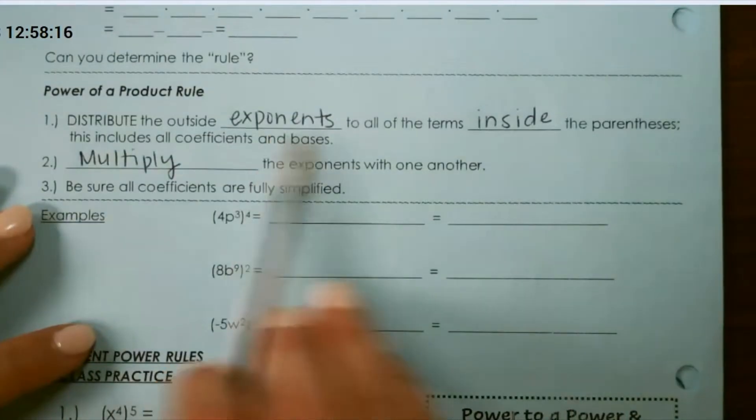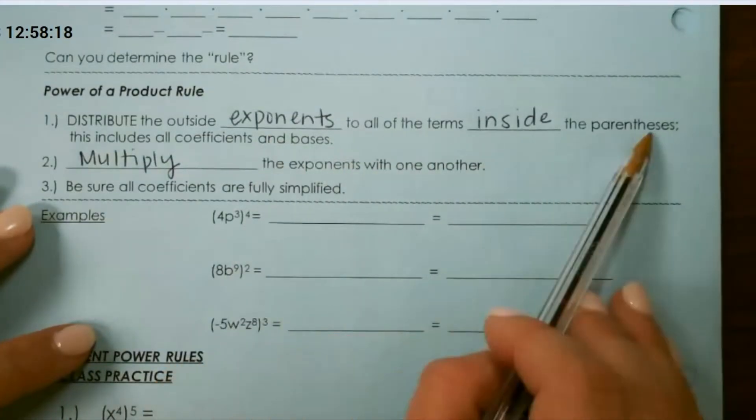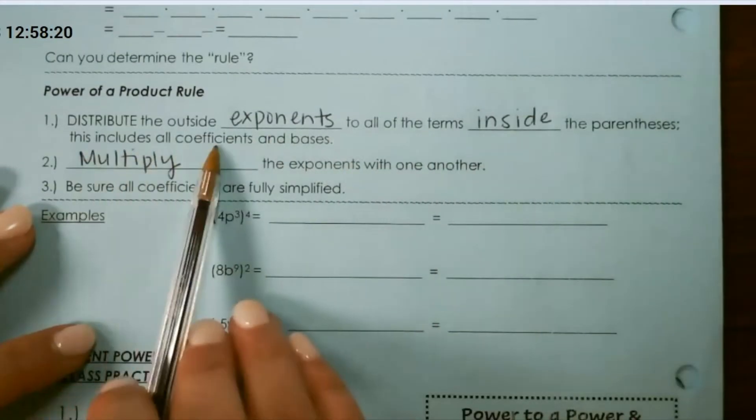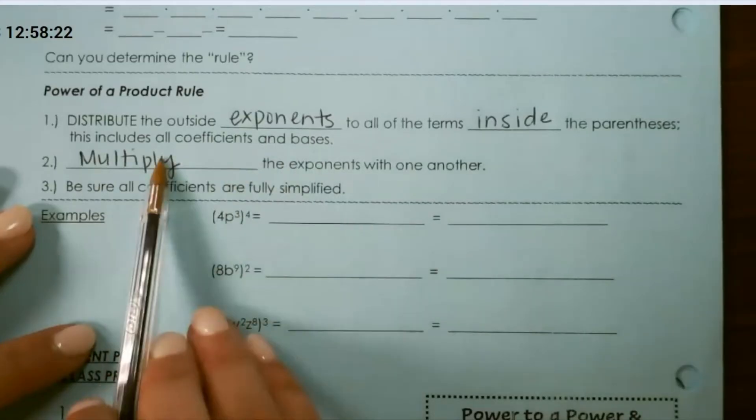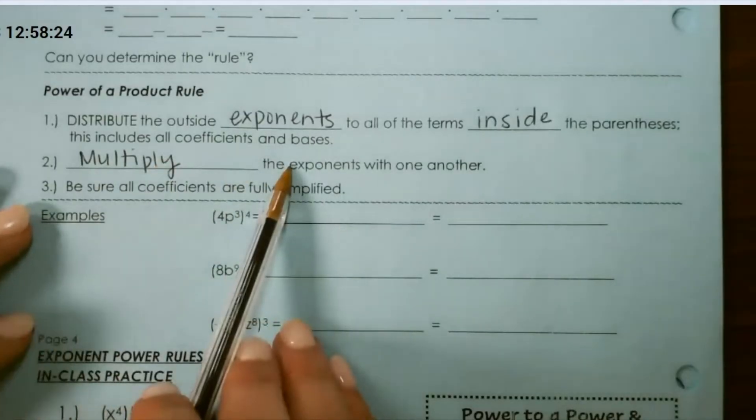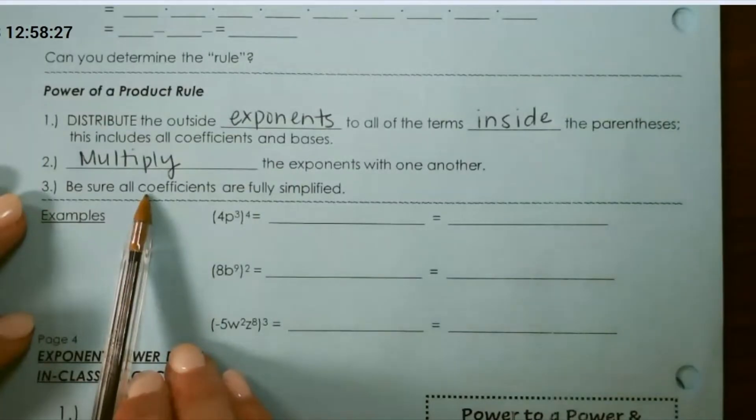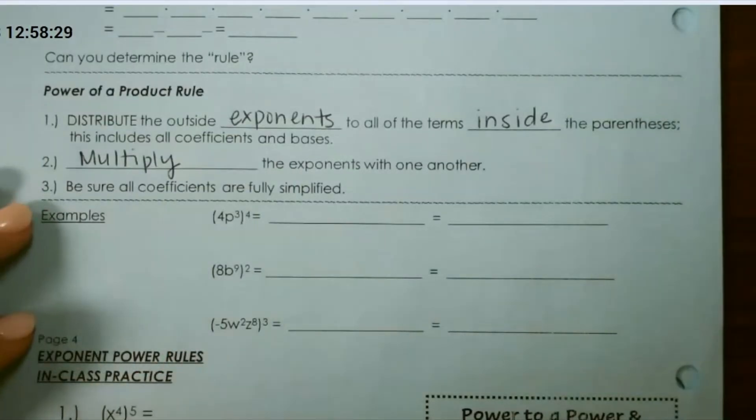Distribute the outside exponents to all of the terms inside the parentheses. This includes all coefficients and bases. Multiply the exponents with one another, and be sure that all coefficients are fully simplified.